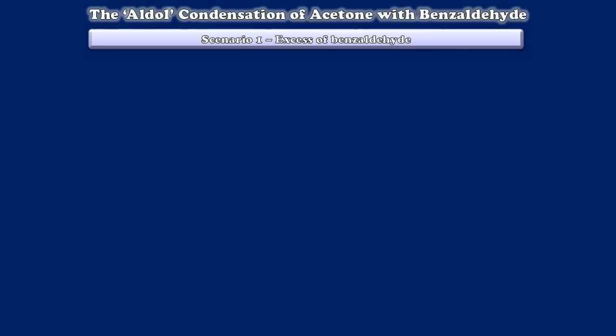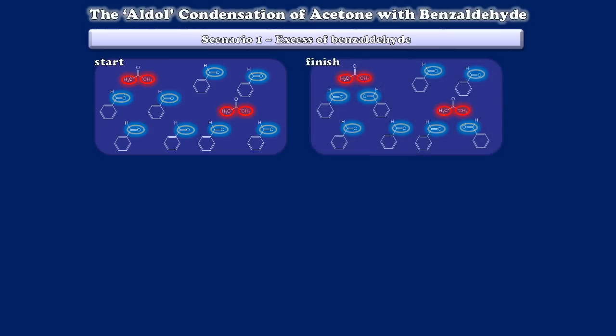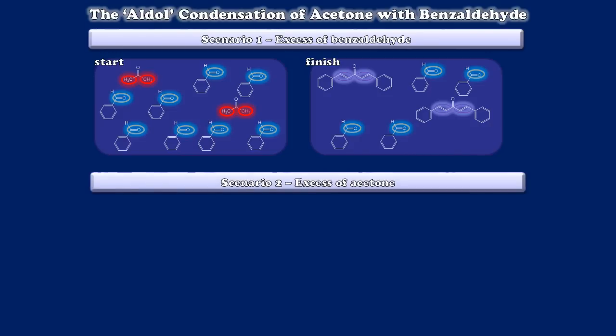Let's consider what happens when we add a lot of benzaldehyde to the mixture. We'd have a starting condition that looks something like this. And as the reaction proceeds, we would assume that there's enough benzaldehyde present that we will completely saturate all of the reactive sites on acetone with the benzaldehyde. So if we had a large excess of benzaldehyde, it would be easy to convert all the acetone into dibenzalacetone.